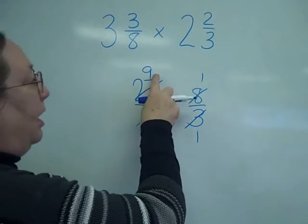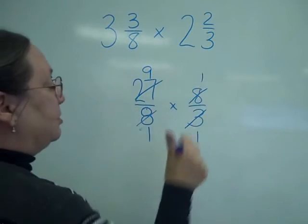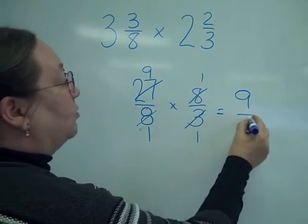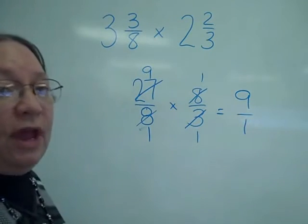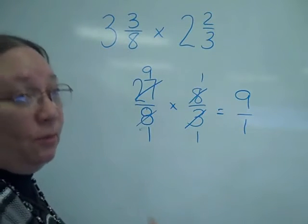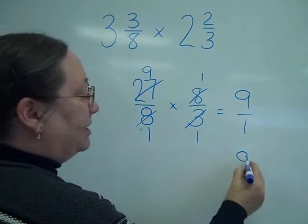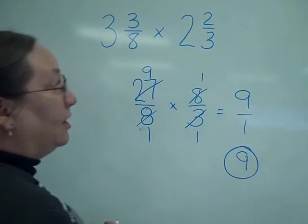Now, remember, multiply the tops. 9 times 1 is 9. 1 times 1 is 1. And remember, if you have an improper fraction, you must divide. 1 goes into 9, 9 times. So, 9 is our answer.